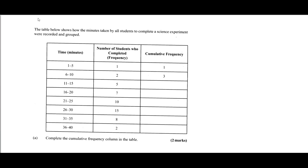The first part of the question: the table below shows how the minutes taken by all students to complete a science experiment were recorded and grouped. So we have some grouped data here — we have time intervals and the number of students who completed within each particular time interval.